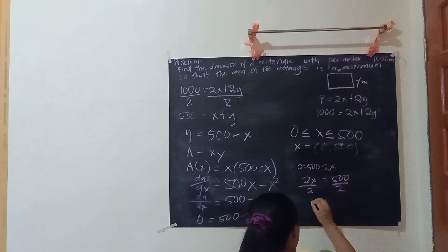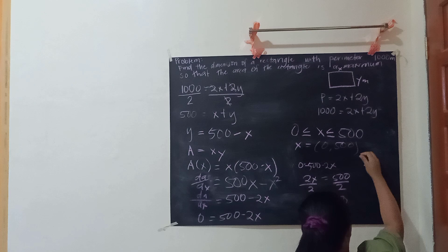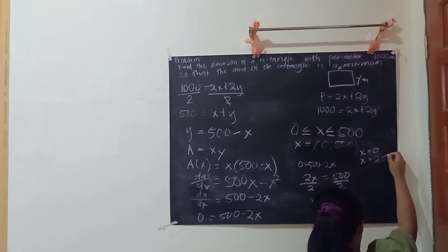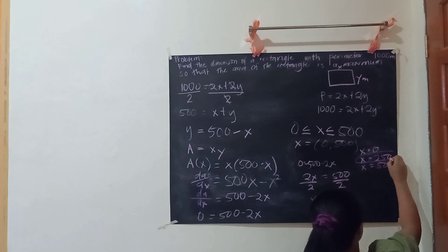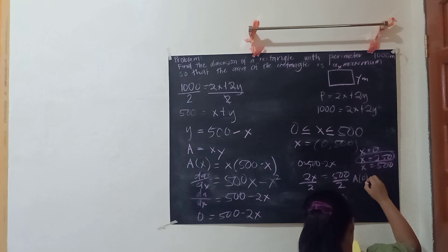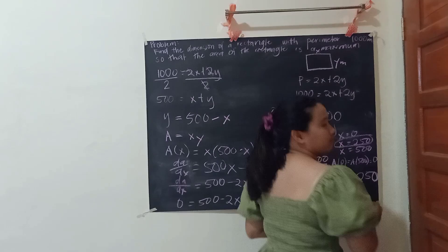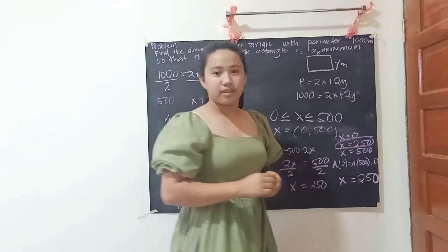Hence, the values to check are x equals 0, x equals 250, and x equals 500. Since A(0) equals A(500) equals 0, the maximum value of A occurs when x equals 250. Therefore, the rectangle is a square with a side length of 250 meters.